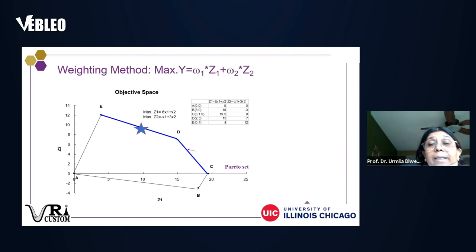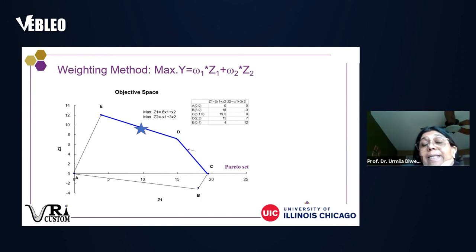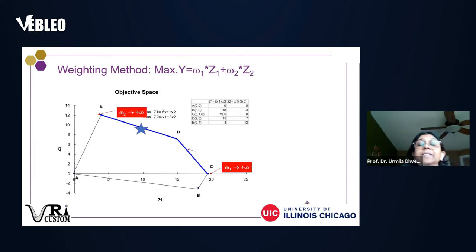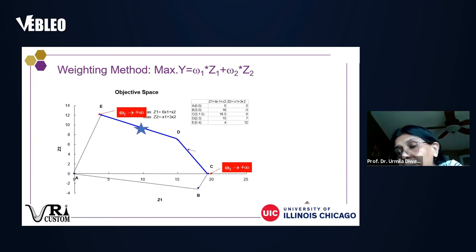To solve this and get the complete trade-off surface, one approach combines objectives with weights ω1 and ω2. But to get the full line requires sweeping from w1 equal to plus infinity to w2 equal to plus infinity — in general, that means infinite optimization problems to solve.